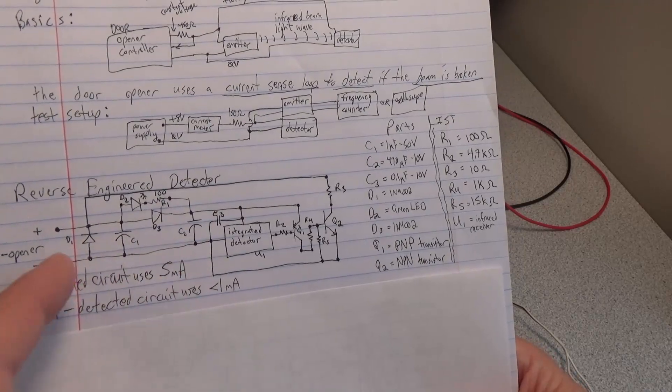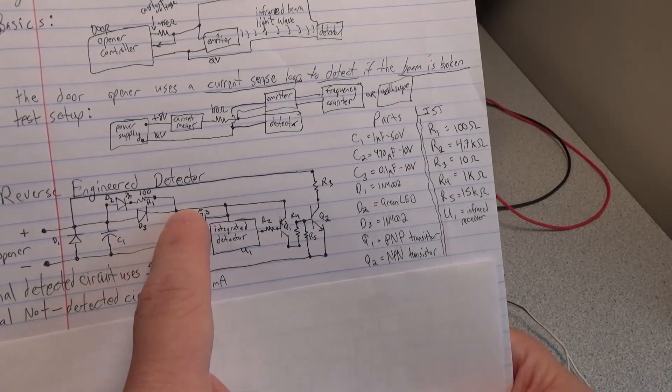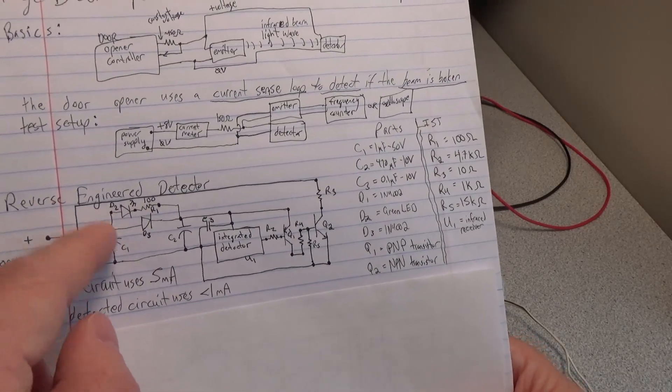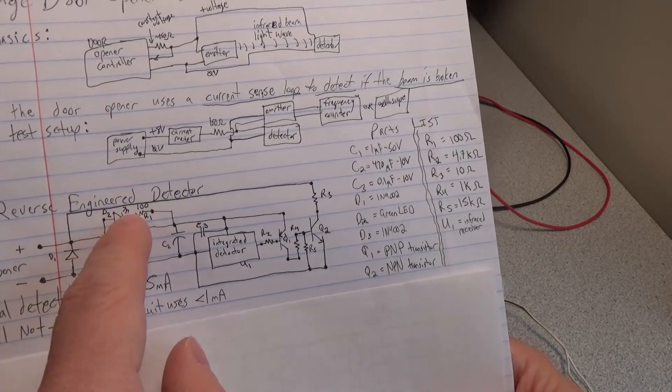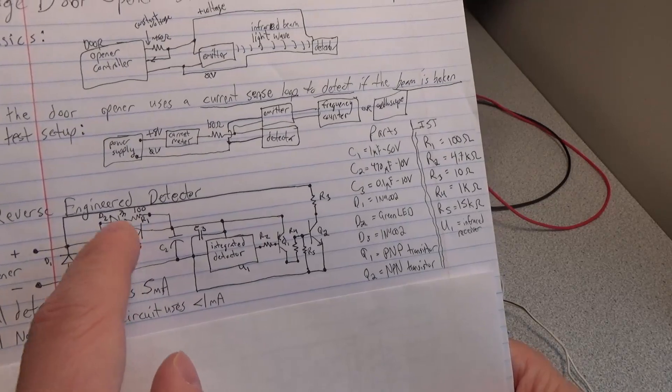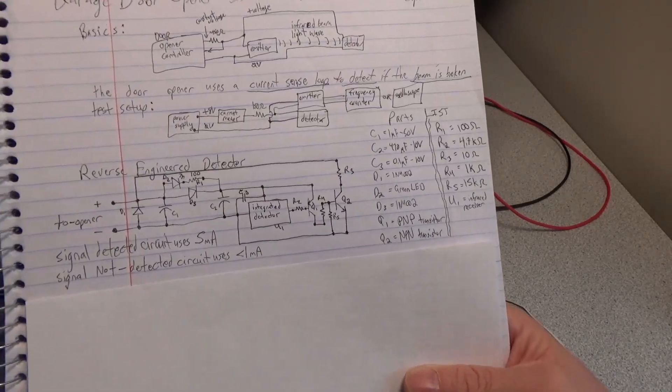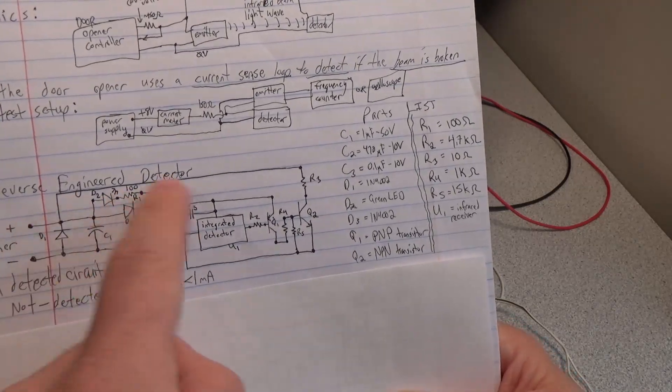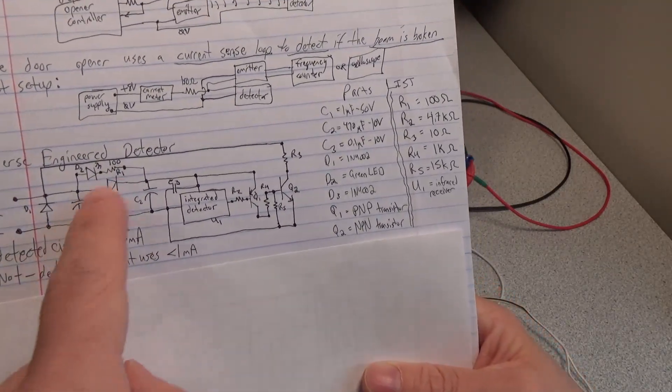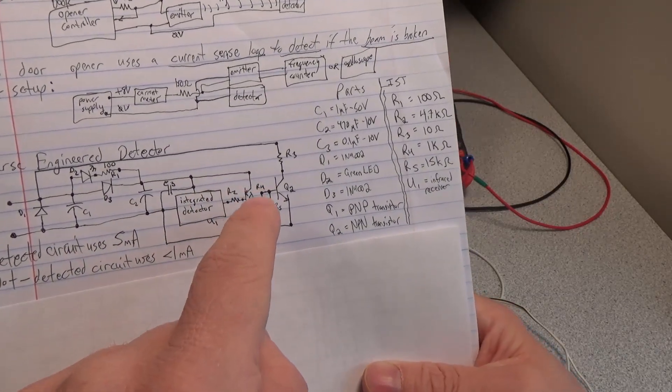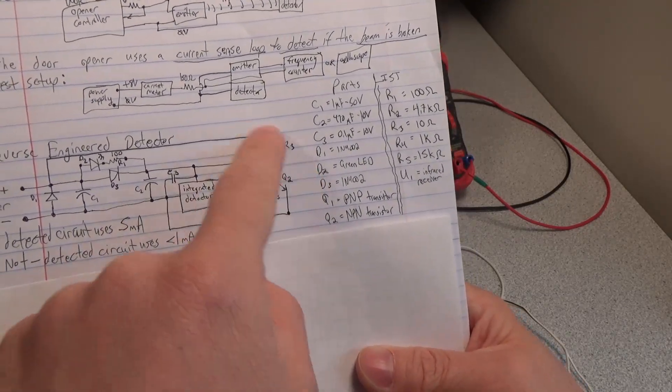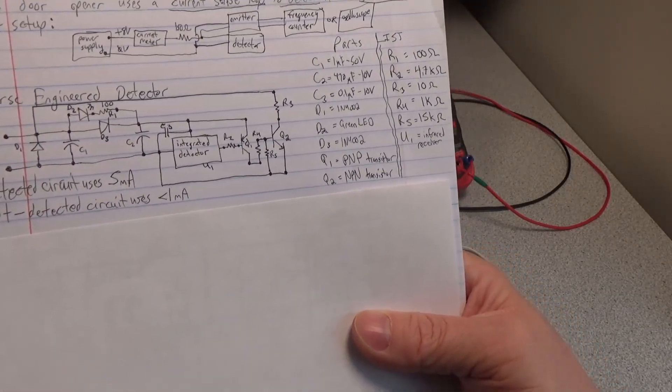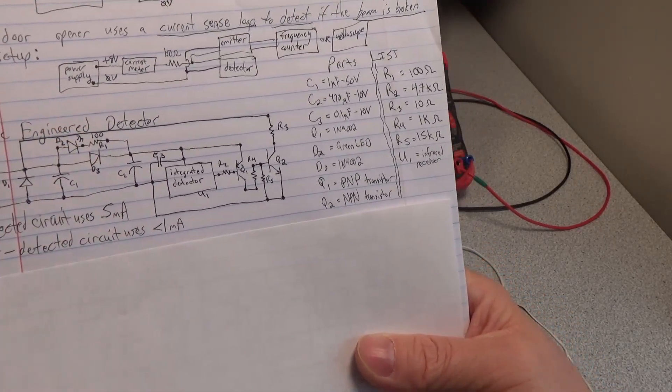Therefore, this LED can't light up because current flows through this other diode. When it detects the signal, this turns on and off, creating some AC signal that allows this LED to turn on and conduct. Normally, only this diode conducts, so the LED doesn't turn on. When the signal is detected, this PNP and NPN transistor will switch this rail on and off, allowing this LED to turn on.